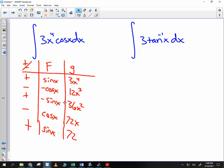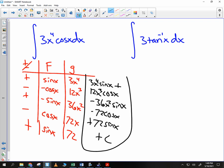So your first term should be positive 3x to the 4th times sine of x. Your second term should be positive 12x cubed cosine of x. Plus or minus? Minus 36x squared sine of x. Plus or minus? Minus 72 cosine of x. And then plus 72 sine of x. And remember your plus C if you forget it to have a point off. Any questions on that?